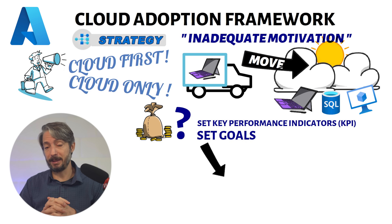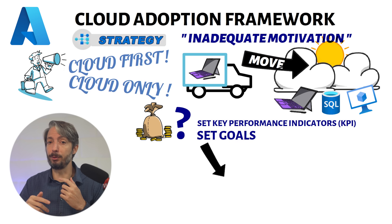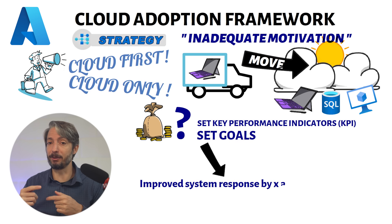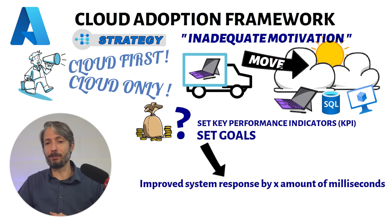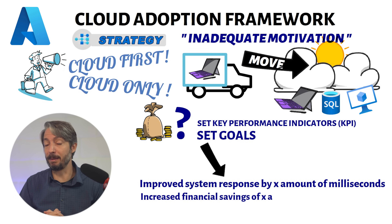KPIs can be set, for example, on business requirements such as improved system response by X amount of milliseconds and an increased financial savings of X amount of dollars per month.